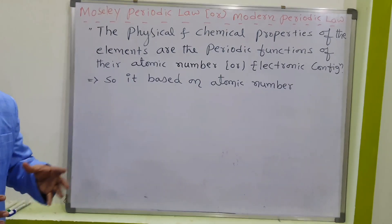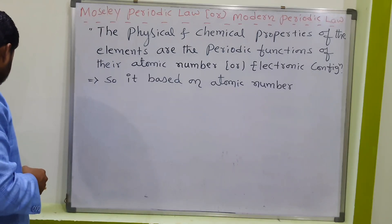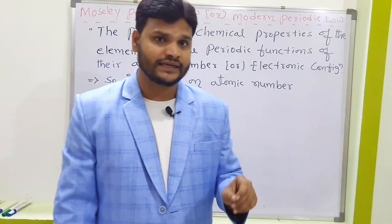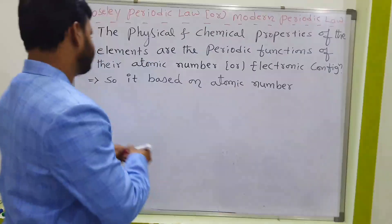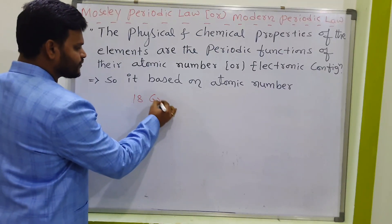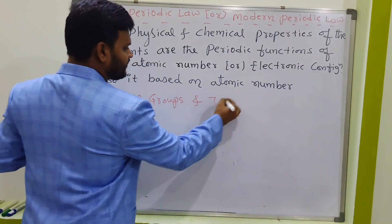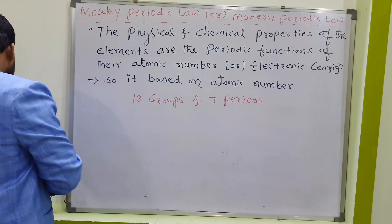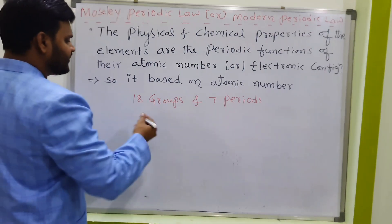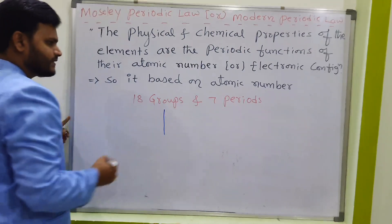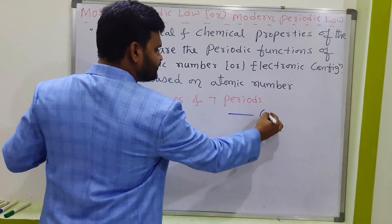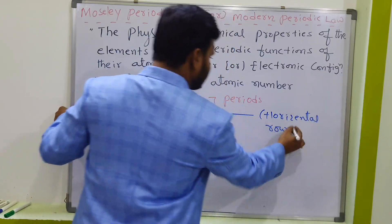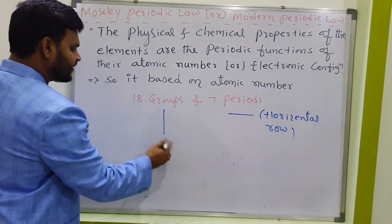The modern periodic table contains 18 groups and 7 periods. Groups are represented by vertical columns, and periods are represented by horizontal rows.